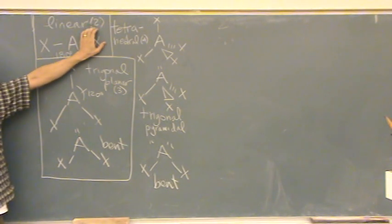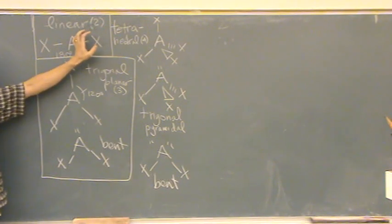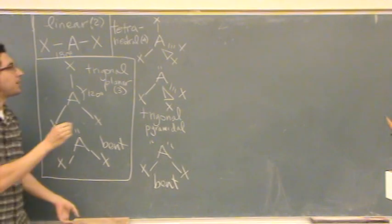So the tetrahedral will never have three lone pairs? No, no, it wouldn't make sense. Okay, the bond angle, thank you for saying that.